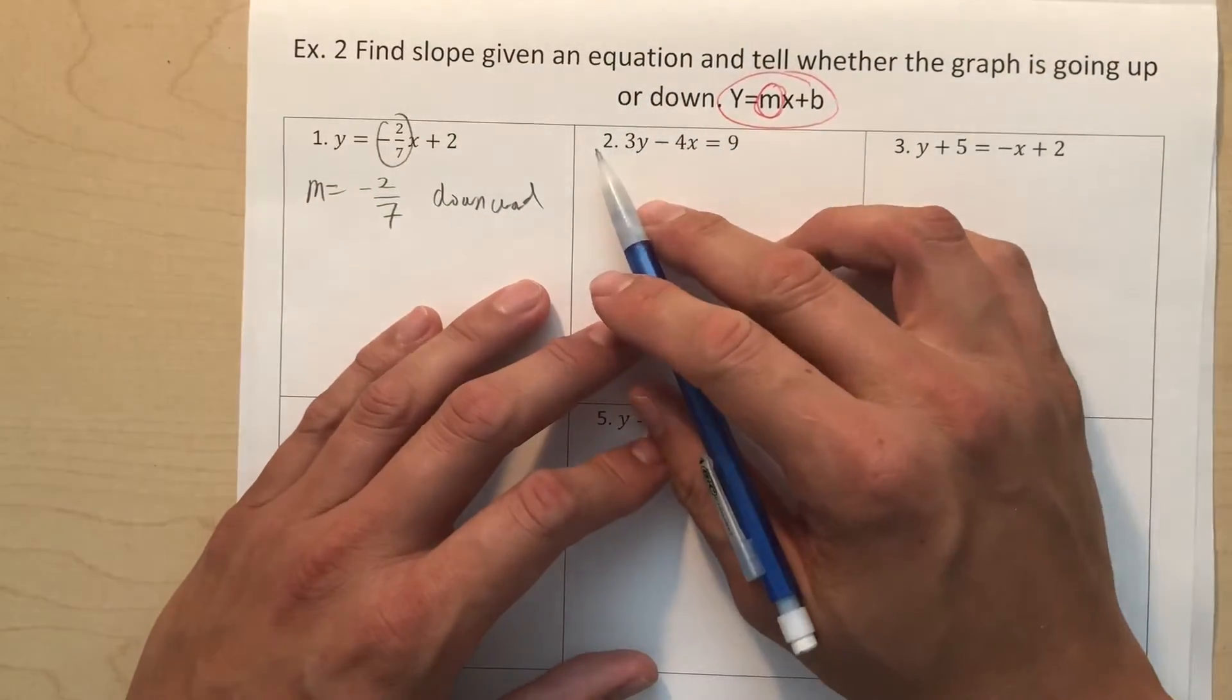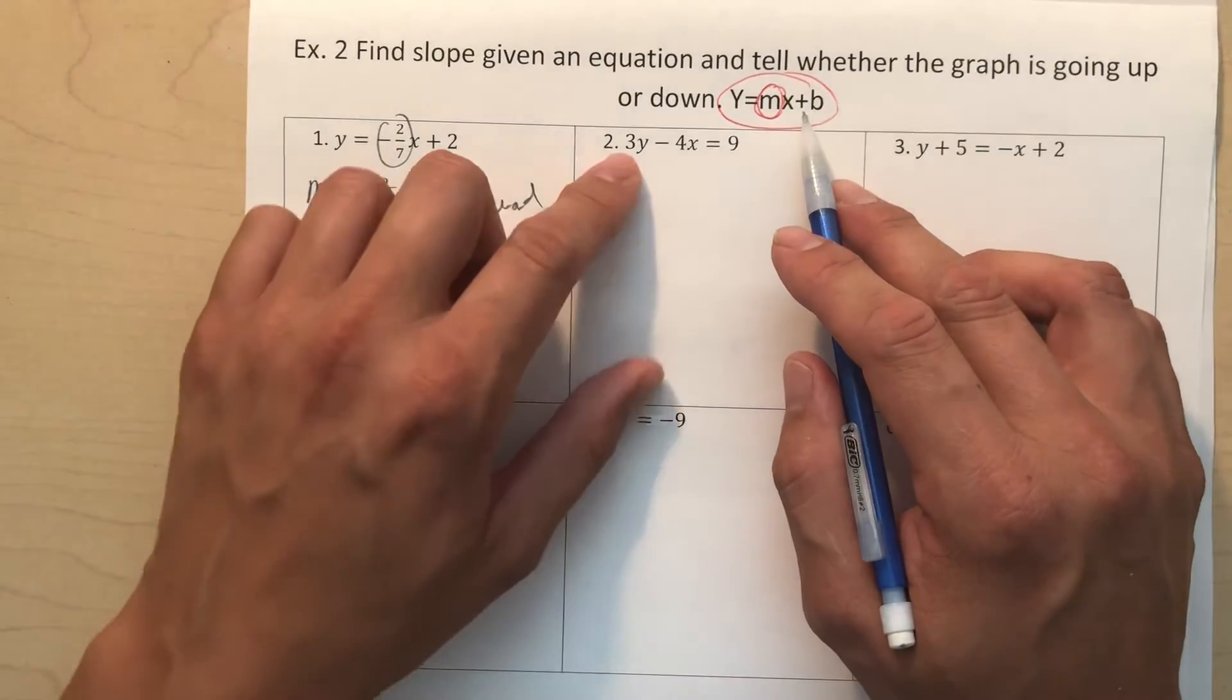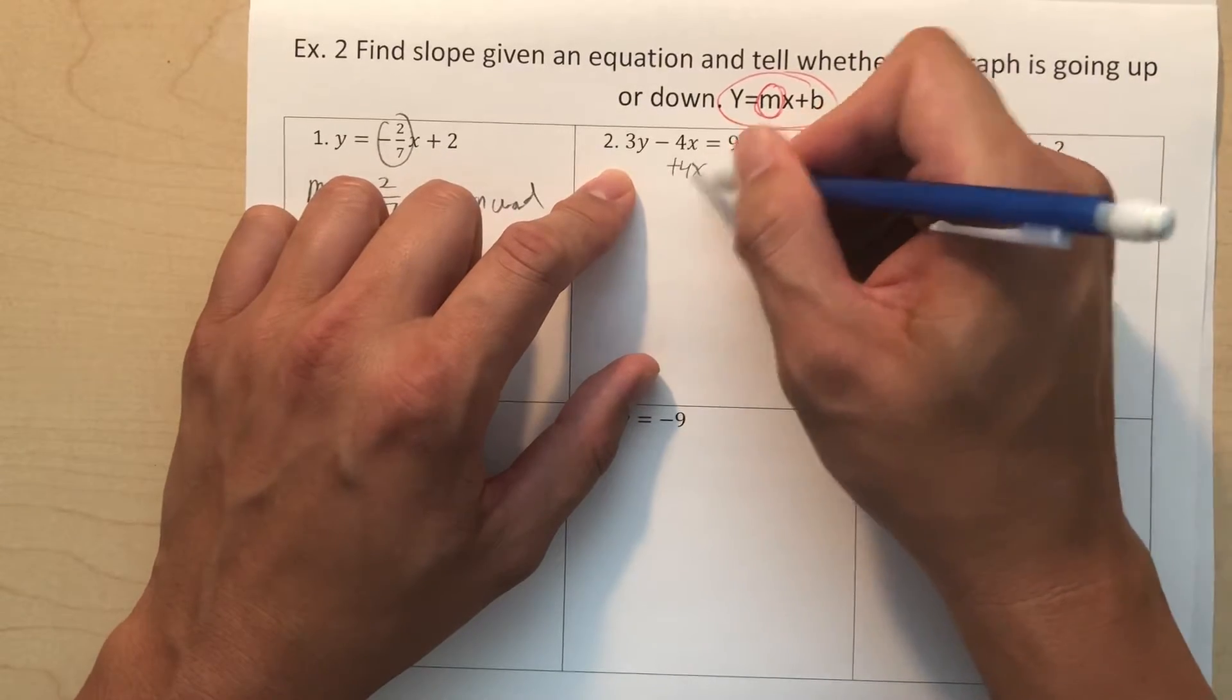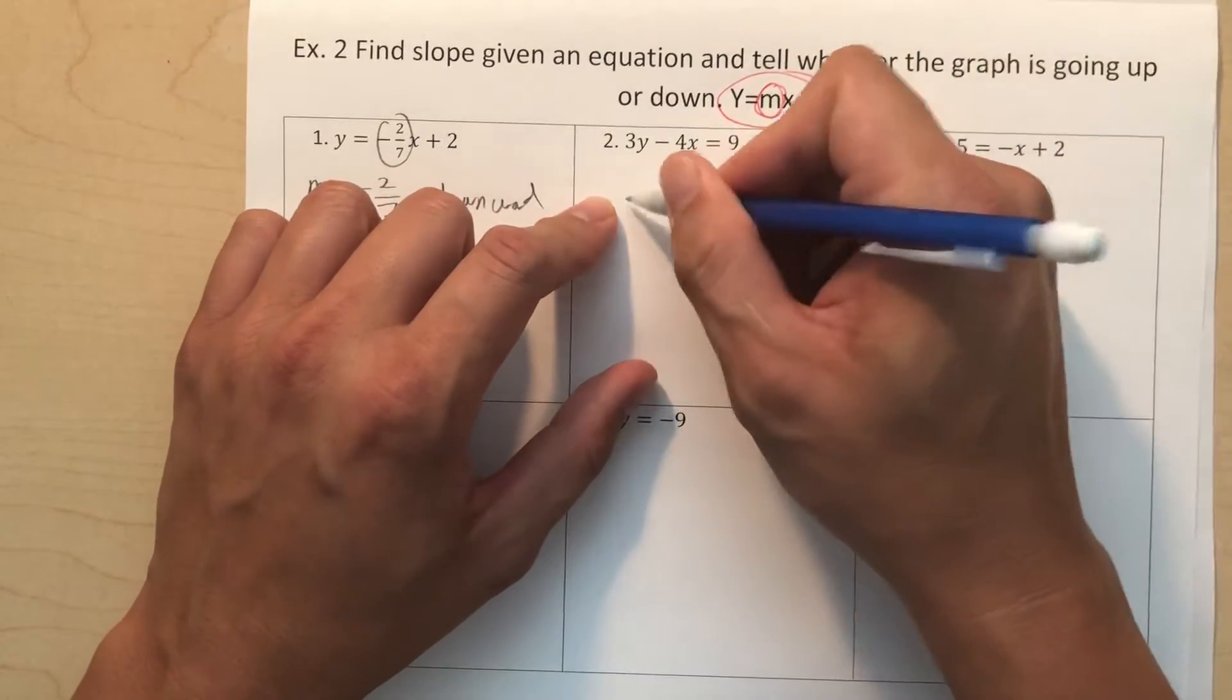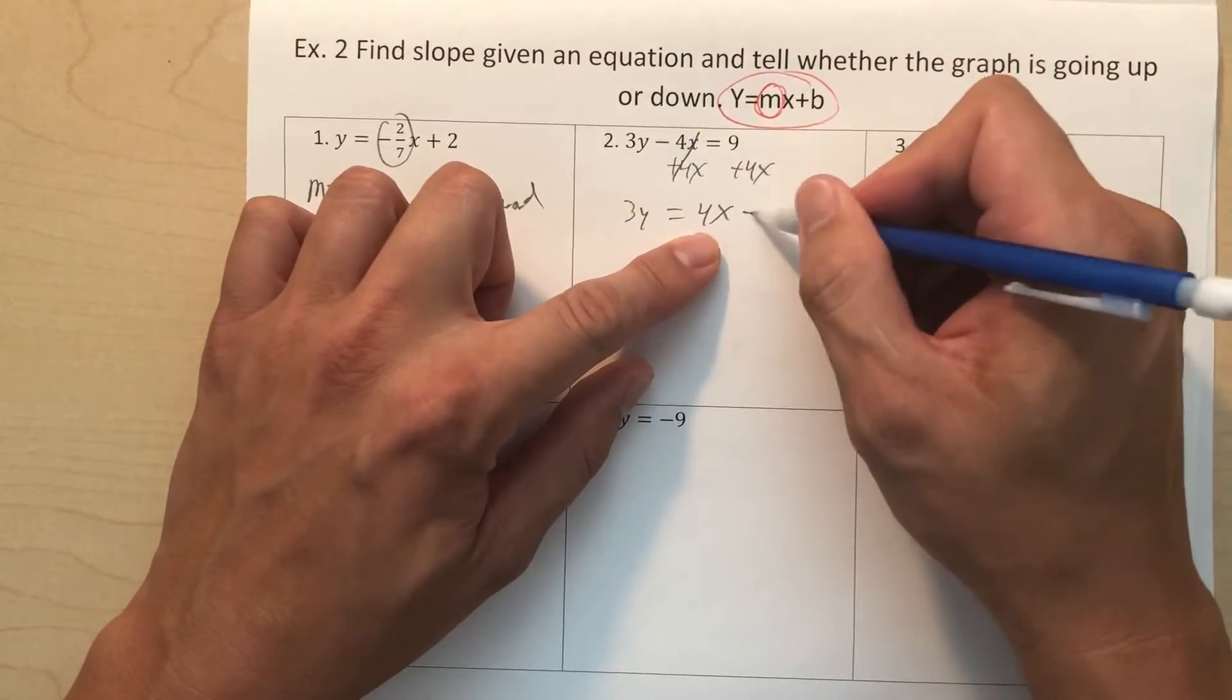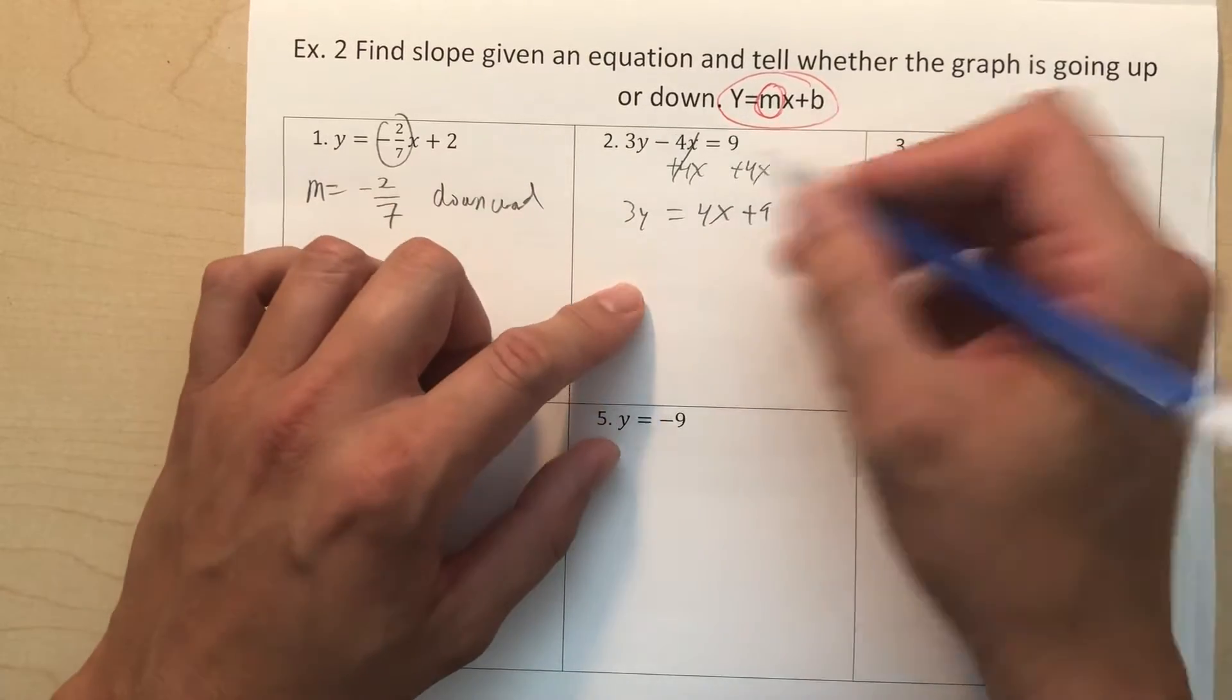Number 2. Now, again, this one doesn't give you y equals mx plus b, but that's okay. We're gonna solve for that. So I'm gonna solve for the y, and I'm gonna get rid of this one first, so I'm gonna add 4x. I like to write my x first, and then the plus 9. If you write the other way, that's okay too, but see how the x comes first. That makes it easier.